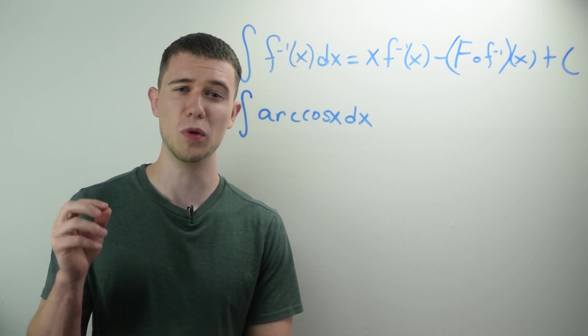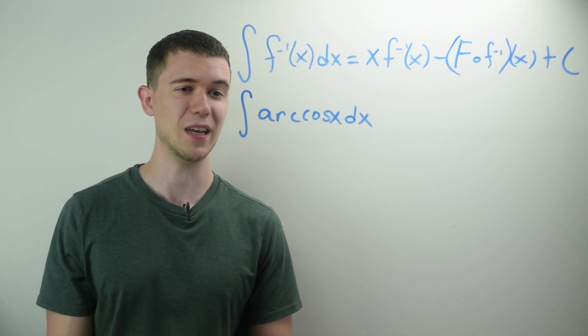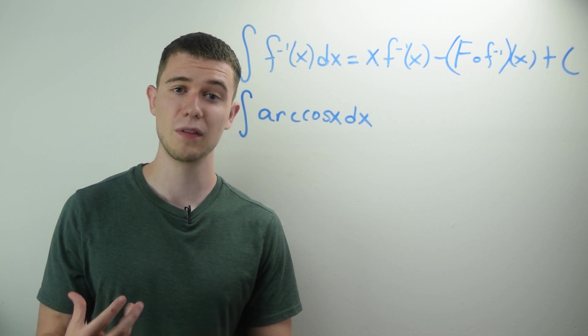So first let's identify what the inverse function is, and what the original function is. It's fairly straightforward. The inverse function is arc cosine, making the original f regular cosine.